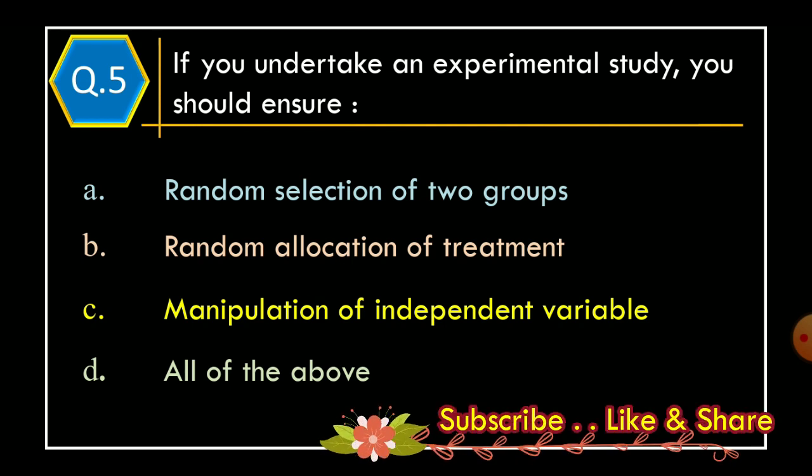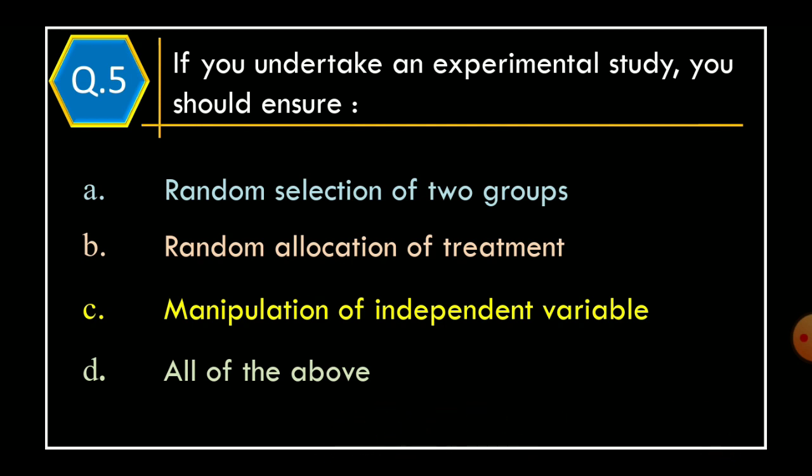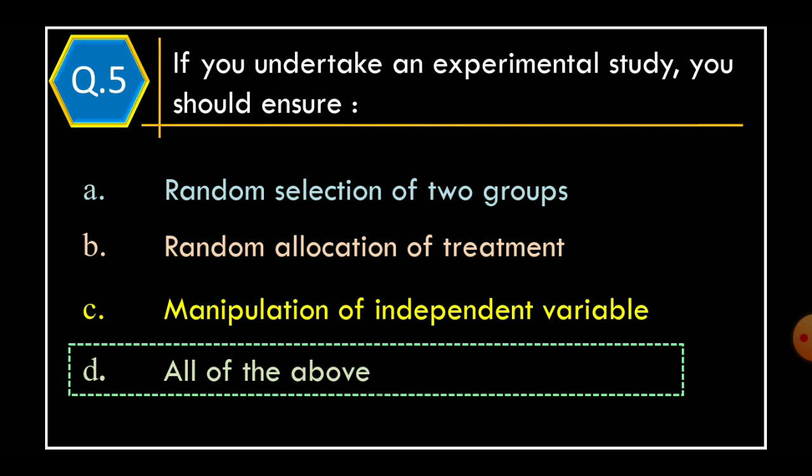Question 5: If you undertake an experimental study, you should ensure — Option A: random selection of two groups. Option B: random allocation of treatment. Option C: manipulation of independent variable. Option D: all of the above. The correct option is Option D, all of the above.